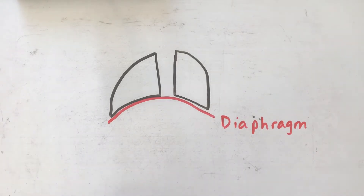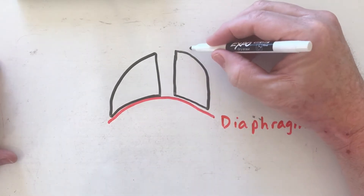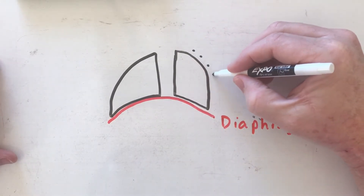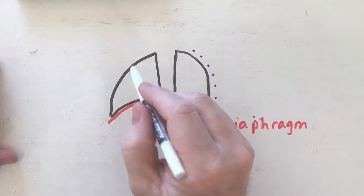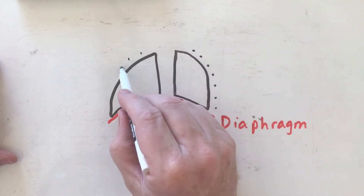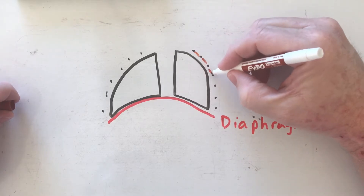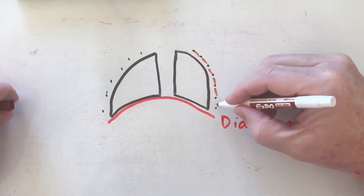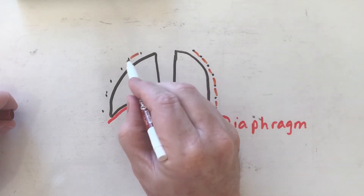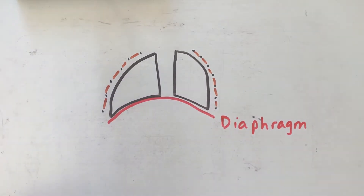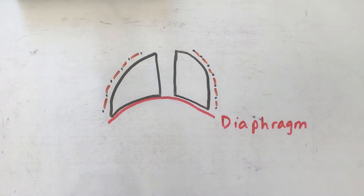Because I'm drawing two-dimensionally, my rib cage would be going around the lungs, something like this. Between the ribs I also have some muscles called intercostal muscles. If you've ever eaten ribs, what you're eating is intercostal muscles. You have two sets: external intercostals and internal intercostals.